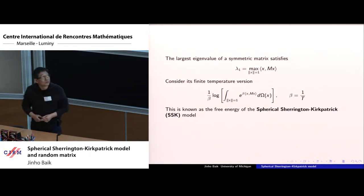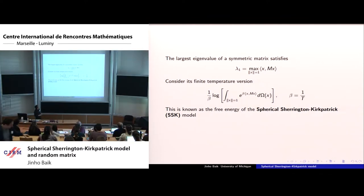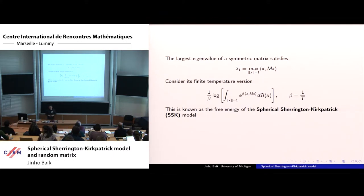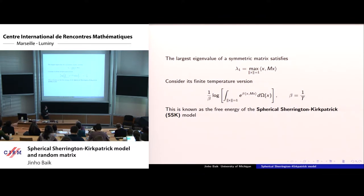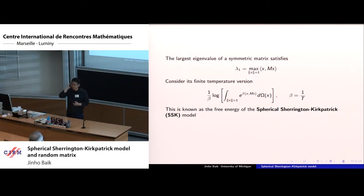So let me start with the following. If you consider a symmetric matrix M and think about the largest eigenvalue, you can specify this to the min-max principle. It can be written as lambda one equals the maximum of the quadratic form x^T M x, where x runs over the sphere. Because this is written in terms of a maximum, you may think about a finite temperature version of this, treating this maximum formula as a zero temperature version.